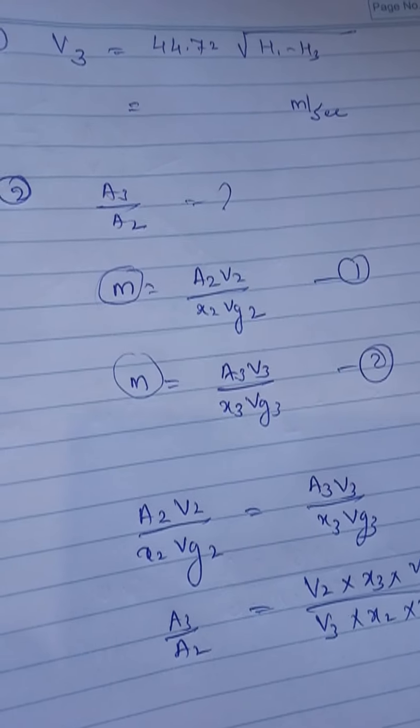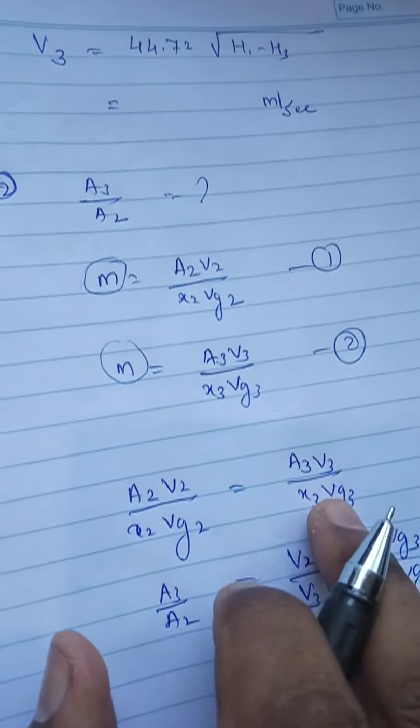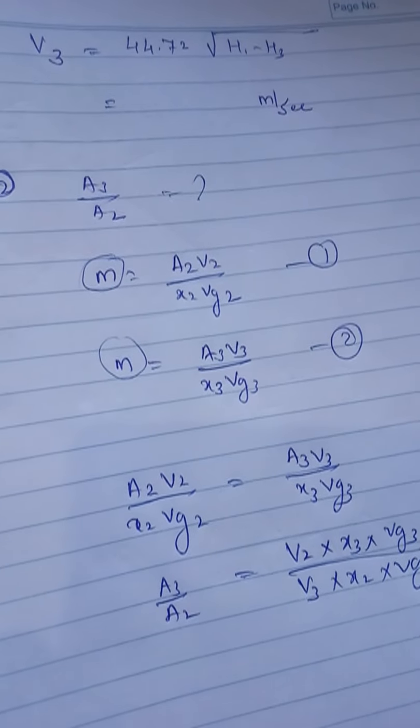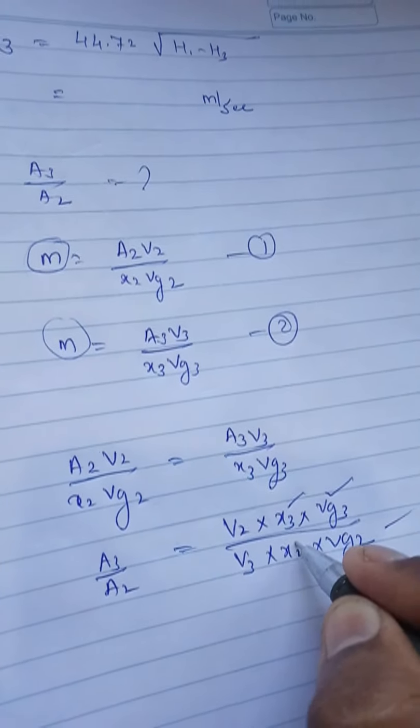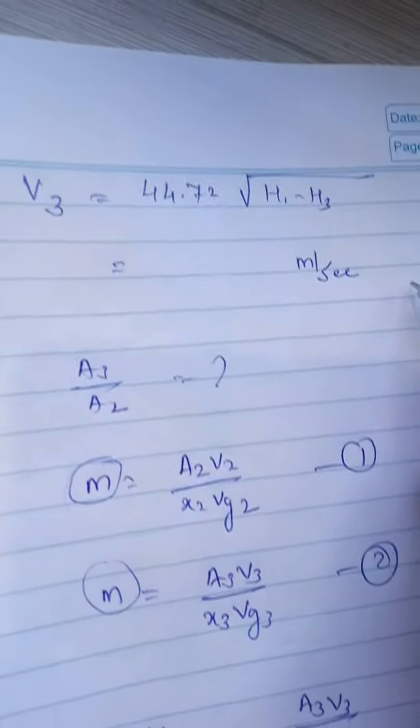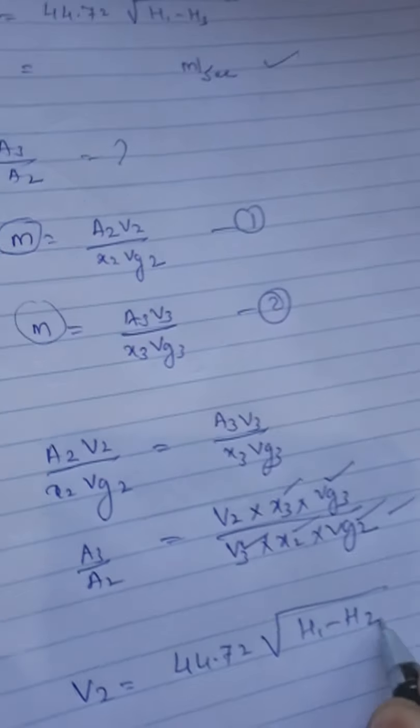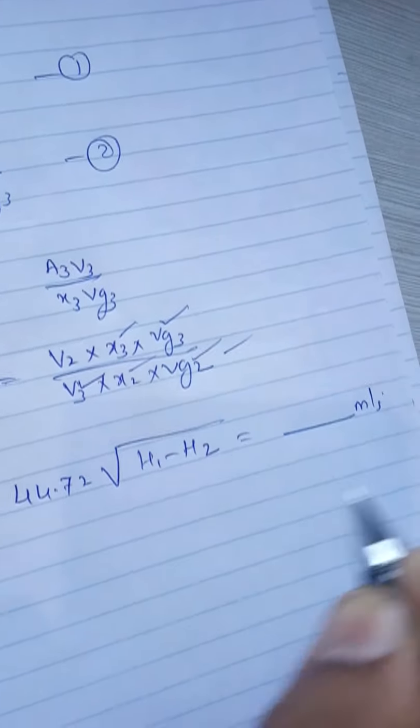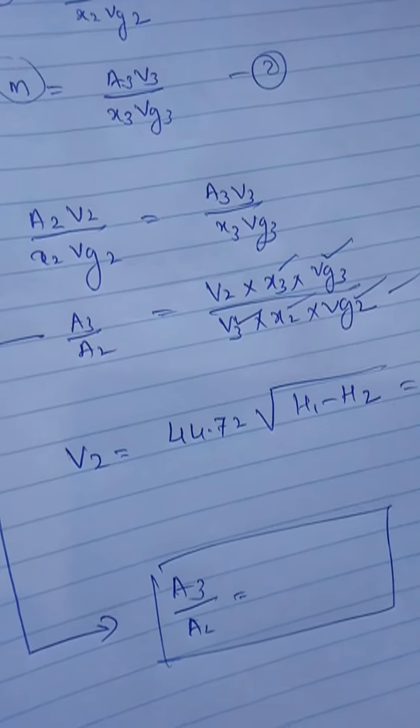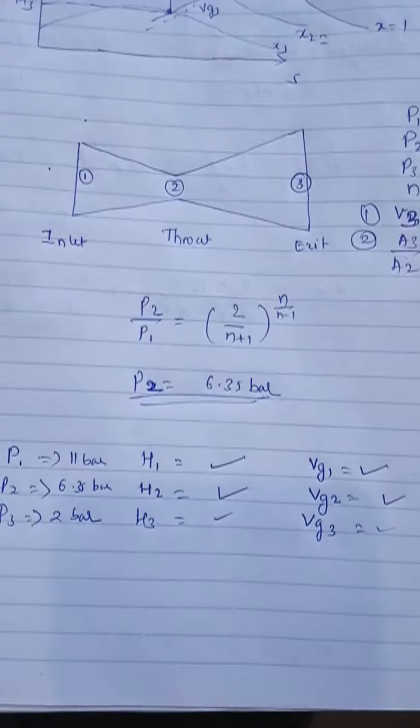So what ratio I want, A3 by A2. So substitute this: A3 by A2 equals V2 into X3 VZ3 divided by V3 into X2 VZ2. So X3 values and VZ3, X2 and VZ2 values are from the stream table Mollier chart, we have taken already. And V3 we have calculated. Now just calculate V2: V2 is equal to 44.72 into root of H1 minus H2, you will get some values meter per second. Substitute this here and you find out the ratio A3 by A2. So is there any more difficulty here? So solution is this much, finding value itself is having importance here.